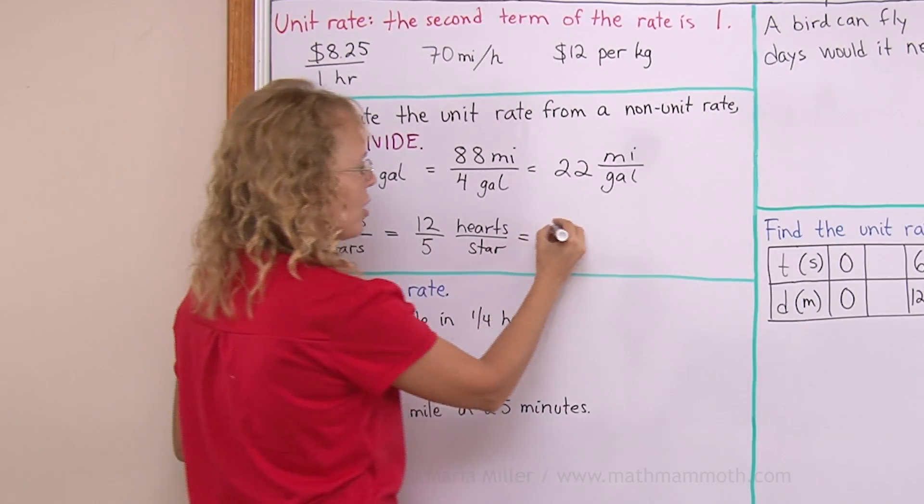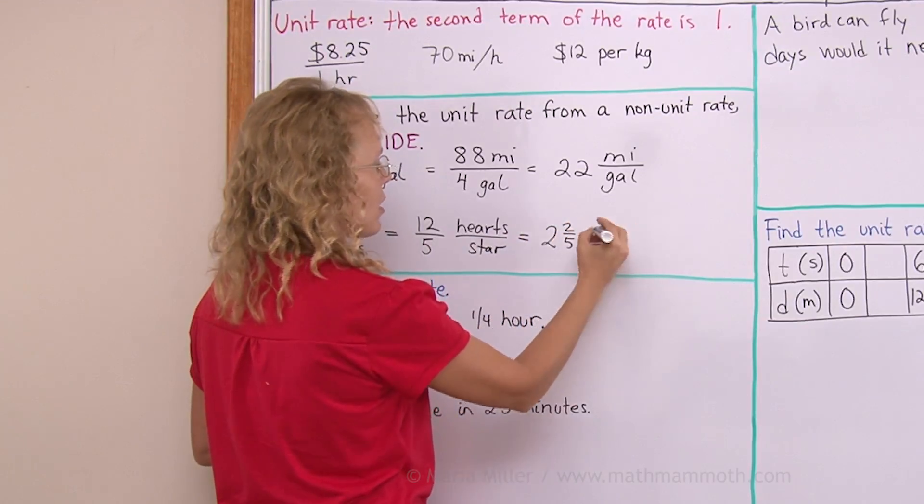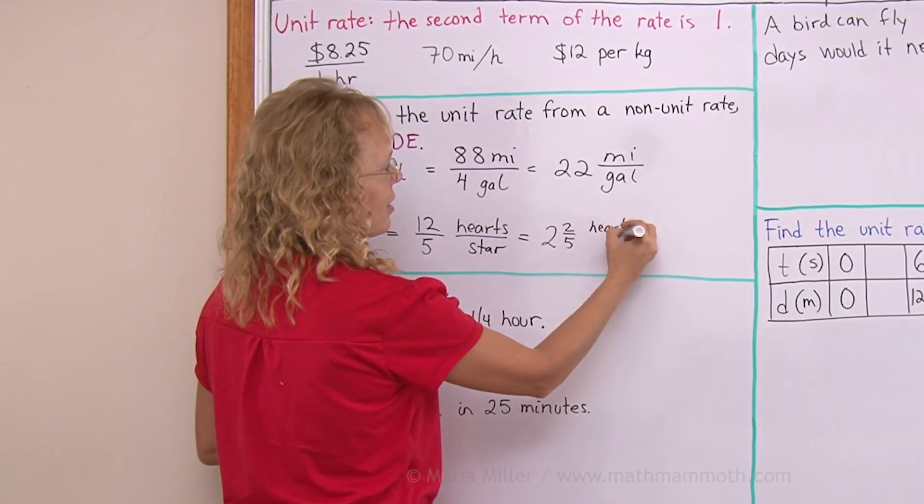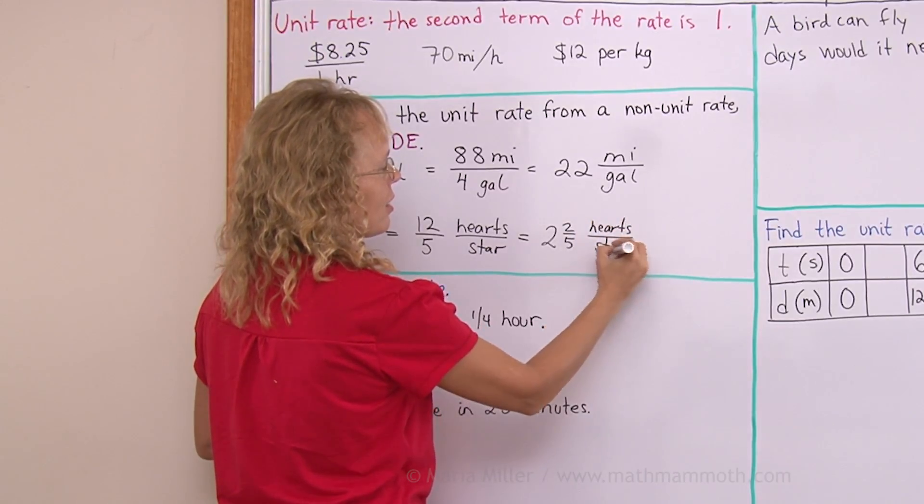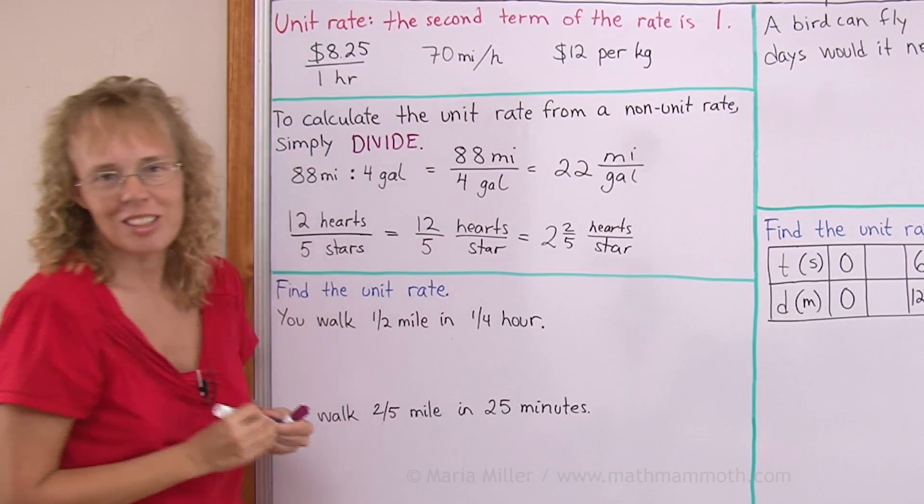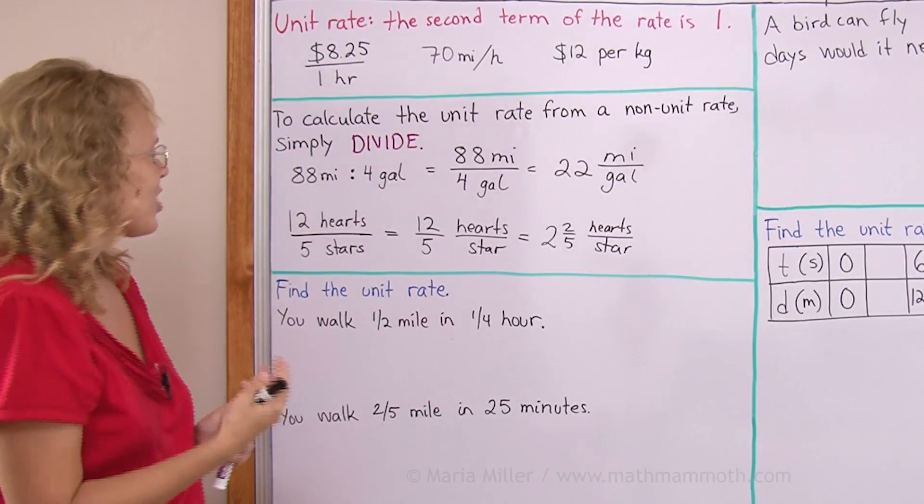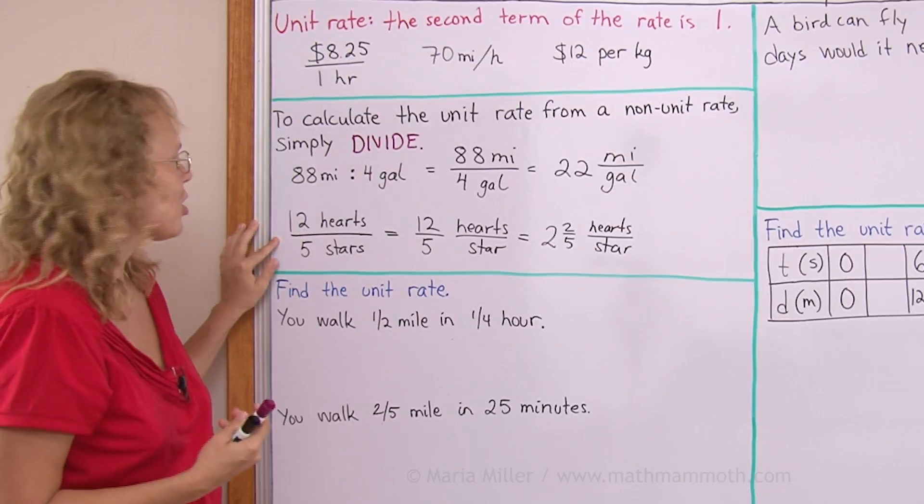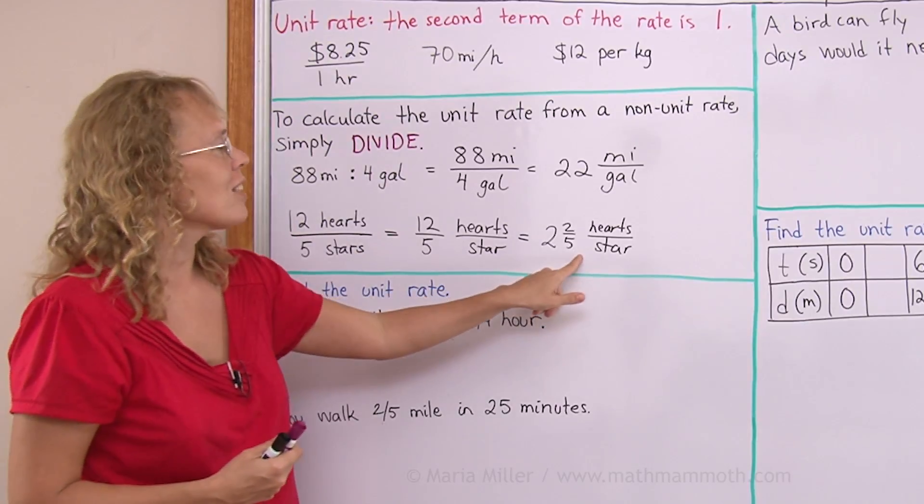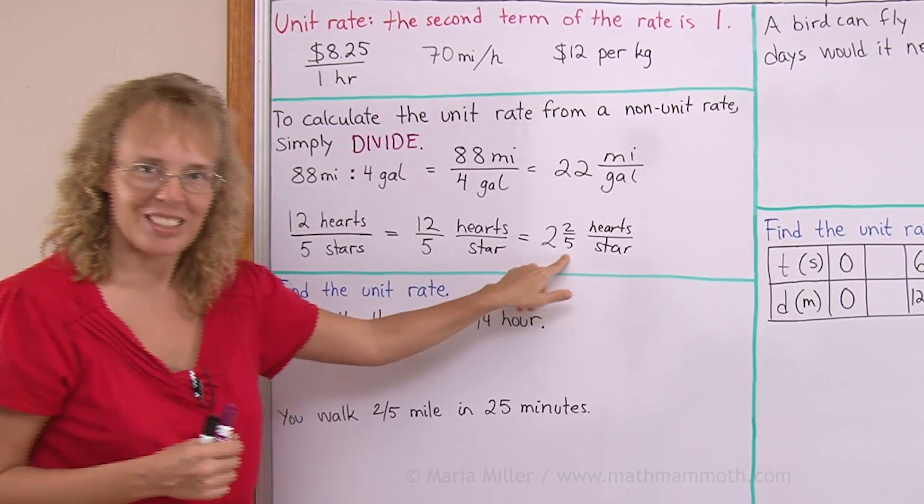Of course, this is now a mixed number. It is 2 and 2 fifths hearts per star. It's a little convoluted example, I know. It is just to illustrate that this is how you technically do it. You divide and then you get this many hearts per one star.